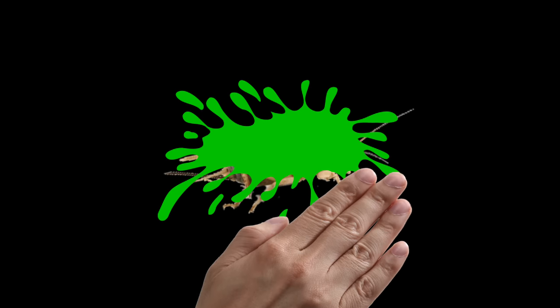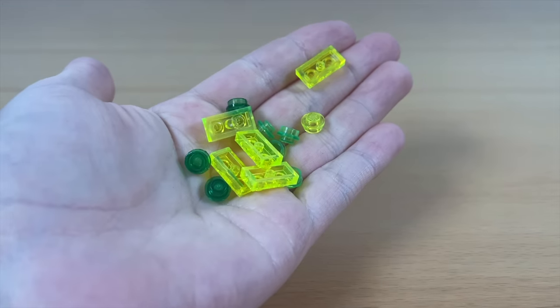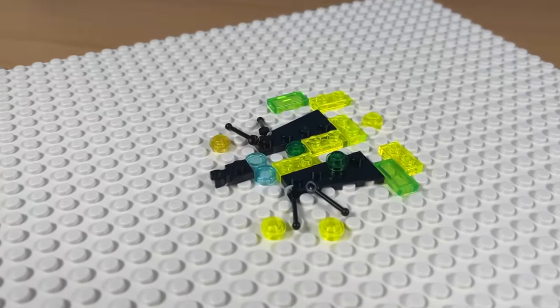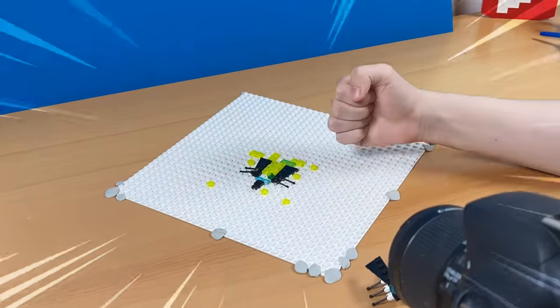All of this kinda reminds me of squashing a bug, so I got this LEGO fly. Now, let's squash it. I used these transparent green and yellow pieces for the insect goo. Looks gross, but that's exactly how I wanted it to look, which is great. Anyway, this last animation turned out really good.